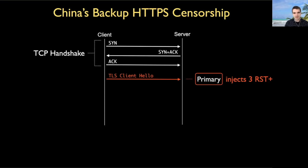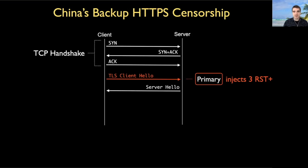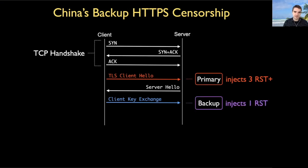Let's explore the failure case — if for some reason the primary doesn't inject packets. In this case, the TLS handshake would continue. The server would send a server hello, the client would send a client key exchange, among some other things. And it's at this point that the secondary system steps in and injects one reset packet in both directions. This is actually why I'm referring to this backup system as a backup — because it only acts after the existing system does not.